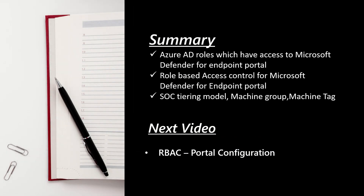Here's a quick summary of what we discussed in this video: we covered the roles in Azure AD that can be assigned to users for access to Microsoft Defender for Endpoint portal. We discussed how the RBAC part works — the two aspects being the tiering model, which defines restrictions on actions a user can take, and limiting the devices visible to a specific SOC analyst. This was the scope for the SOC tiering model, machine groups, and machine tagging. In the next video I'll show you the end-to-end RBAC portal configuration.